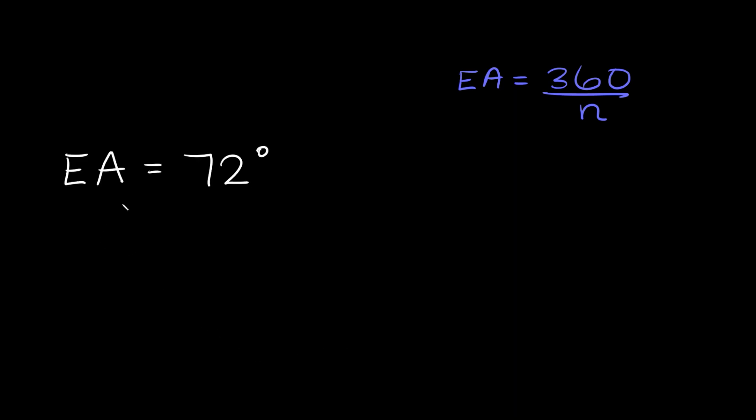Now some problems are going to give you the measure of each exterior angle and it's going to be your job to find how many sides that shape or the polygon has. So in order to do that here the problem says each exterior angle is equal to 72 degrees. So we just have to plug in 72 for the EA over here and then we're going to solve for n for the number of sides.